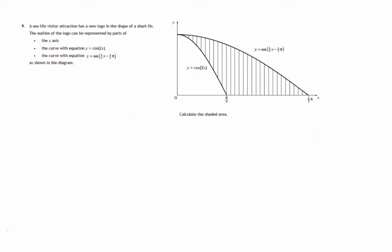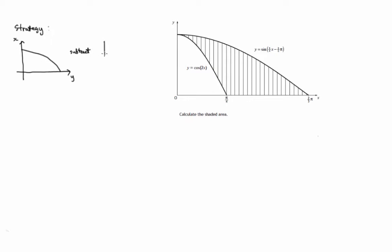So let's have a look at the strategy for this question. The strategy is we'll take the larger of the two areas, that's the top curve, and we'll subtract the smaller area. So larger area minus smaller area.